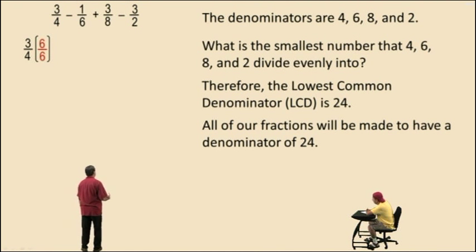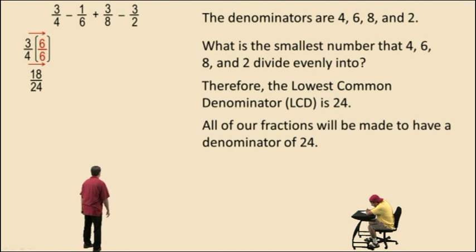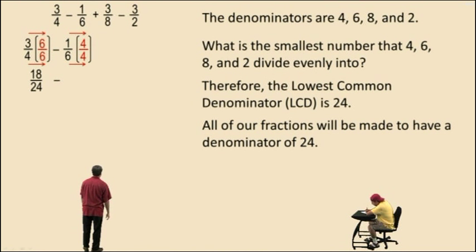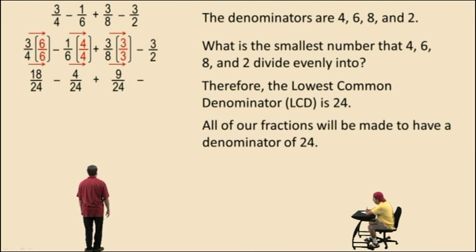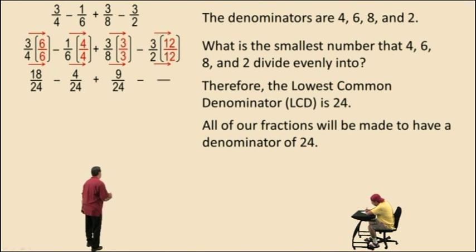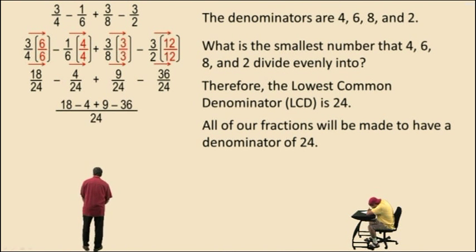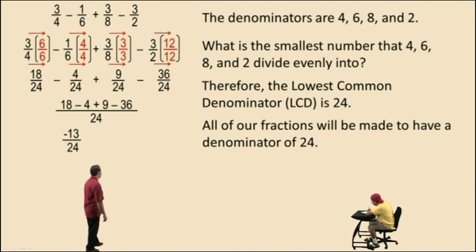So all of our fractions will be made to have a denominator of 24. For 3 fourths, 4 times 6 is 24, so we multiply top and bottom by 6 — that changes the fraction to 18 over 24. For 1 sixth, multiply top and bottom by 4, because 6 times 4 is 24, and that fraction becomes 4 twenty-fourths. For 3 eighths, multiply top and bottom by 3, because 8 times 3 is 24, and 3 times 3 is 9 — so our fraction is 9 twenty-fourths. For 3 halves, multiply top and bottom by 12, because 2 times 12 is 24, and 3 times 12 is 36 — so our fraction is 36 twenty-fourths. Our denominator remains unchanged, and we have 18 subtract 4 plus 9 subtract 36, which is negative 13 over 24.